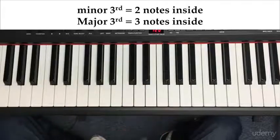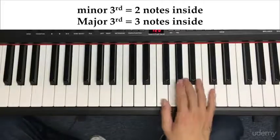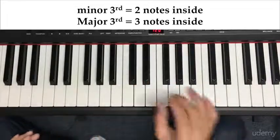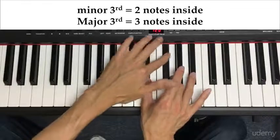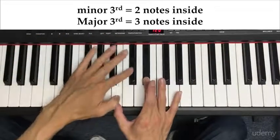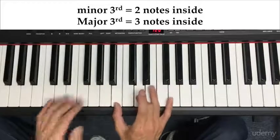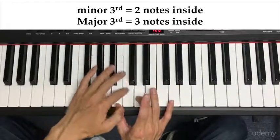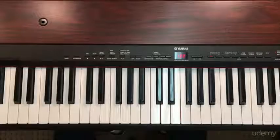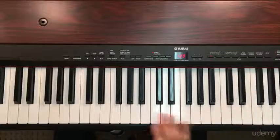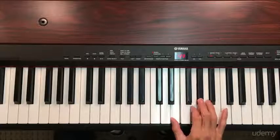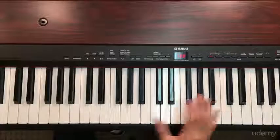With that knowledge, we can go play other minor thirds and other major thirds. Over here, that's a major third because there's three inside of it. If we go here, that's a major third because it has those three notes inside of it. Here, that's a major third because there's three notes inside of it. But if we play this, that's a minor third because it has two notes. Now that you understand that these intervals are just distances, you can place them anywhere on the keyboard — as long as it has three notes inside of it, it's a major third, and that can be anywhere on the keyboard.